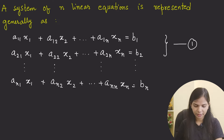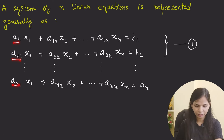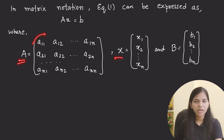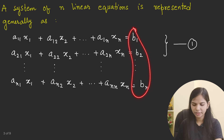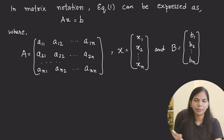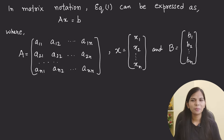We can represent this system in matrix form. We write it as A times x equals b, where A contains all the coefficients a11, a21, ..., an1, a12, a22, etc. The vector x contains the variables x1 through xn, and b is the right-hand side values. In our methods, we will use this matrix representation.